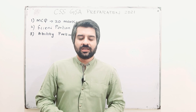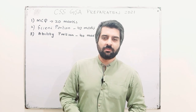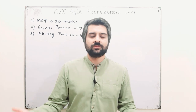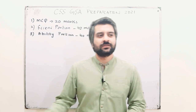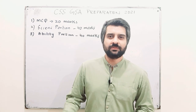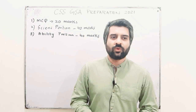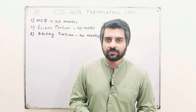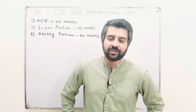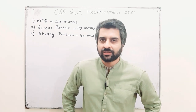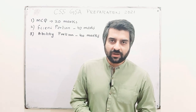Talking about the division of marks in your General Ability paper: you have 100 marks and it is a compulsory paper. You have three portions — one is MCQs, where you will have a paper of 20 marks and you have to complete it in half an hour. Then you have a subjective part.